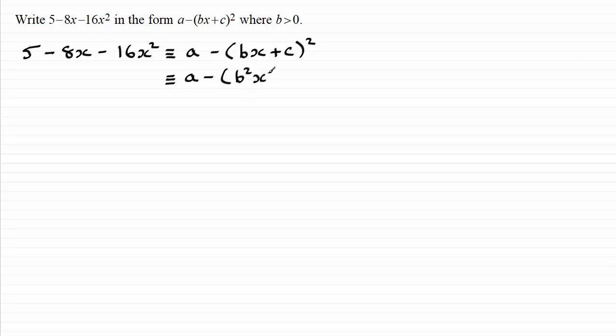...we'll get the first term squared, b squared x squared, twice the product of these two terms, so it'll be plus 2bcx, and then you've got the last term squared, so that's plus c squared.